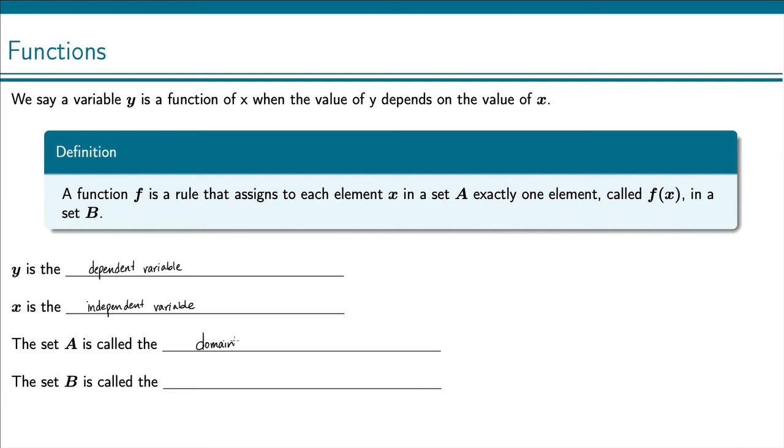And then the set B, this is where our outputs will come from. And this is called the codomain.